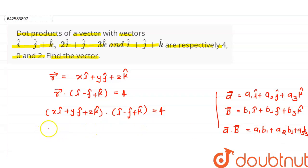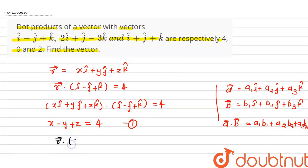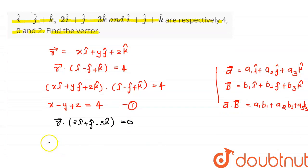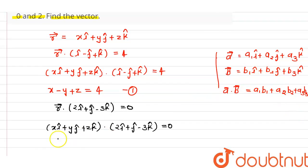We are also given that the dot product of vector r with (2i cap plus j cap minus 3k cap) equals 0. Substituting the assumed value of vector r, that is (x i cap plus y j cap plus z k cap) dot (2i cap plus j cap minus 3k cap) equals 0. Using the dot product concept, this gives us 2x plus y minus 3z equals 0. This is equation 2.